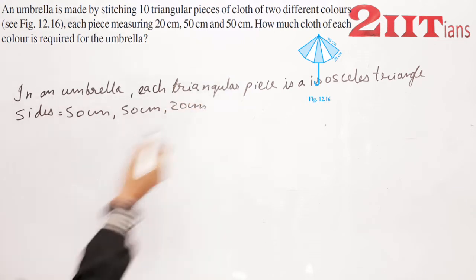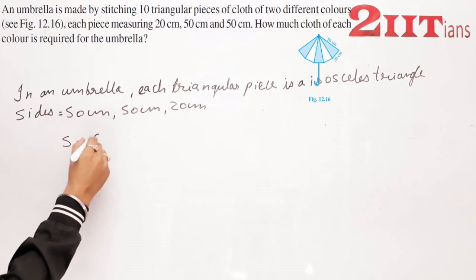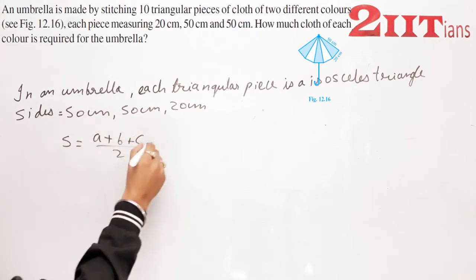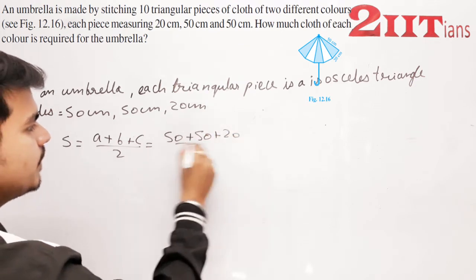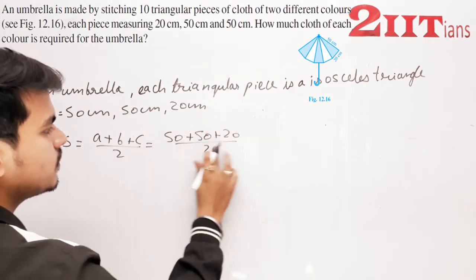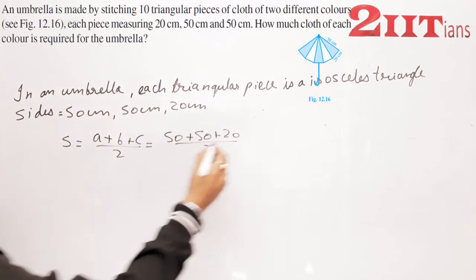Now, S = (a + b + c)/2 = (50 + 50 + 20)/2 = 60cm.